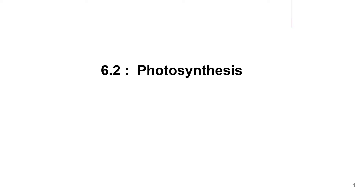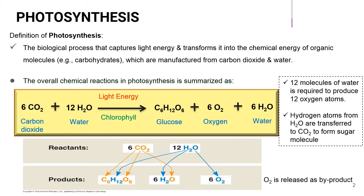We move on to 6.2 photosynthesis. This slide shows the definition of photosynthesis — it is a biological process that captures light energy and transforms it into the chemical energy of organic molecules, which are manufactured from carbon dioxide and water. This is the overall chemical reaction in photosynthesis, whereby the process requires carbon dioxide and water.